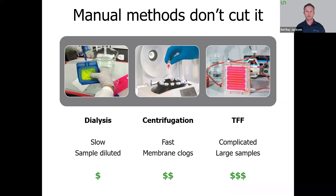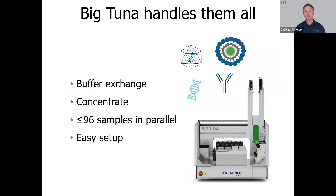All of these manual methods are difficult to scale up. So what if there was an automated solution for all the gene therapy biomolecule samples that you need to process — and on top of it, what if it scales well? That is the BigTuna. BigTuna can handle all of these biomolecules and can perform both buffer exchange and concentration with greater than 96 samples in parallel, without sacrificing ease of use. I'd like to spend the next few minutes showing results of how well BigTuna works with all those different biomolecules, why it's the superior choice for scaling up, and how you can integrate BigTuna into your overall workflows.